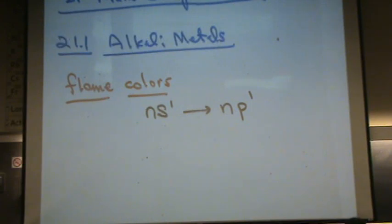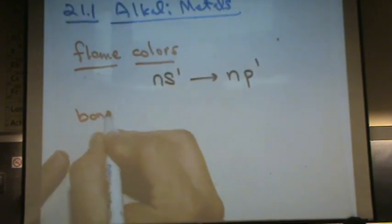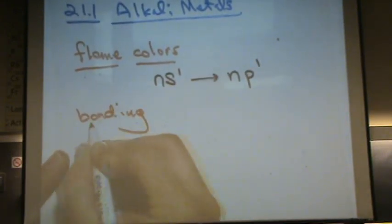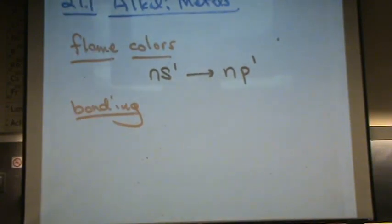Bonding. The NS1, they're really weak bonding. These are relatively weak. That makes these metals malleable and not as strong, because there's only one electron, the NS1 electron.